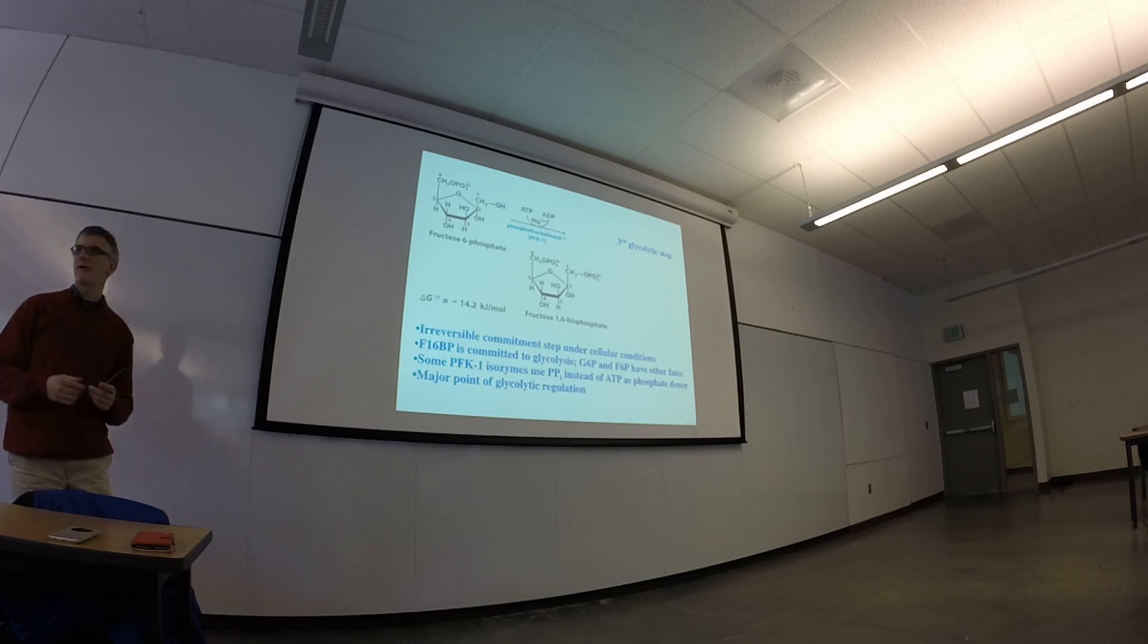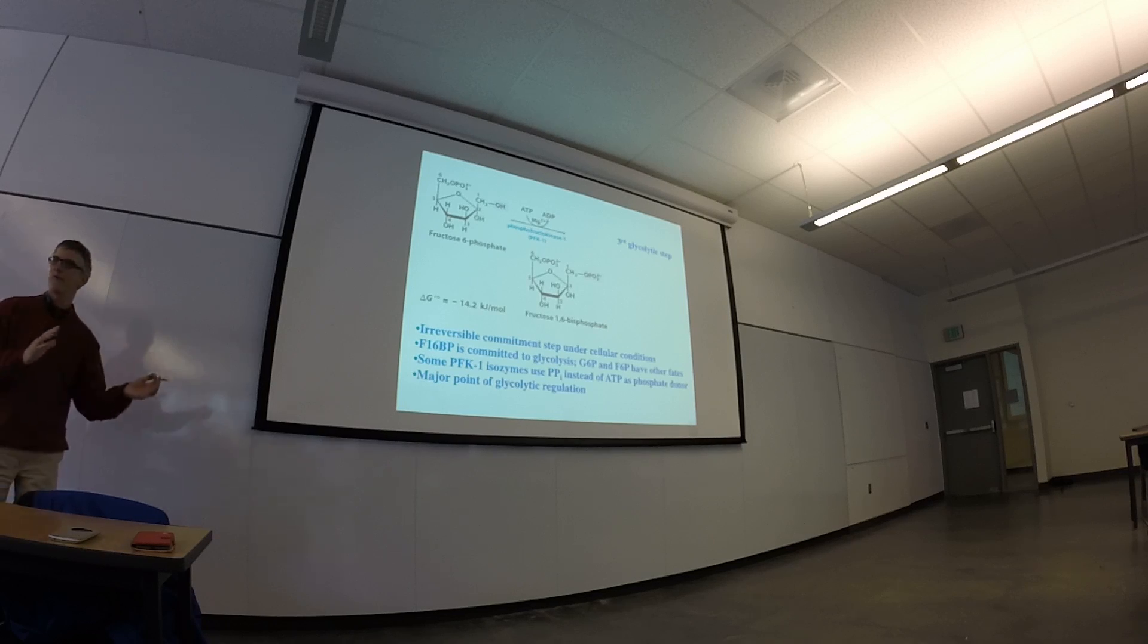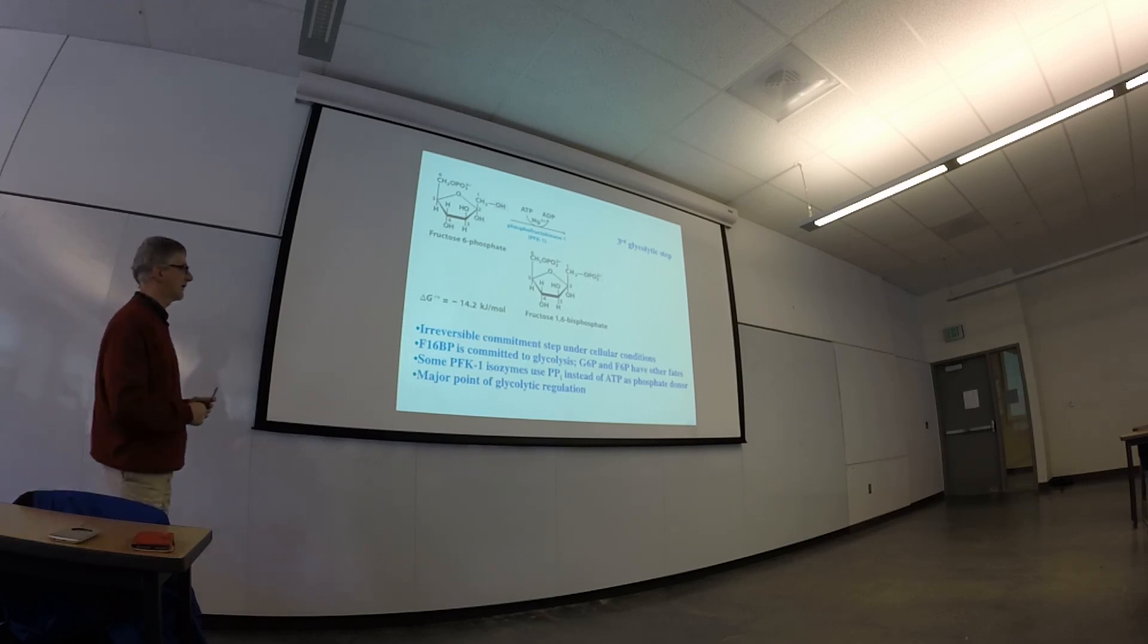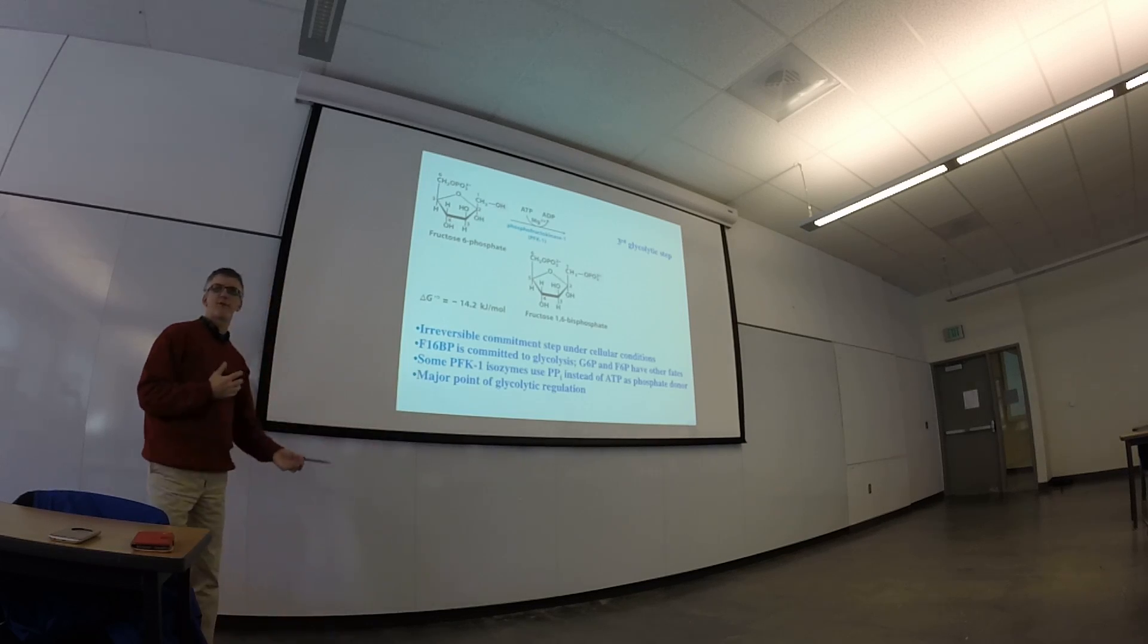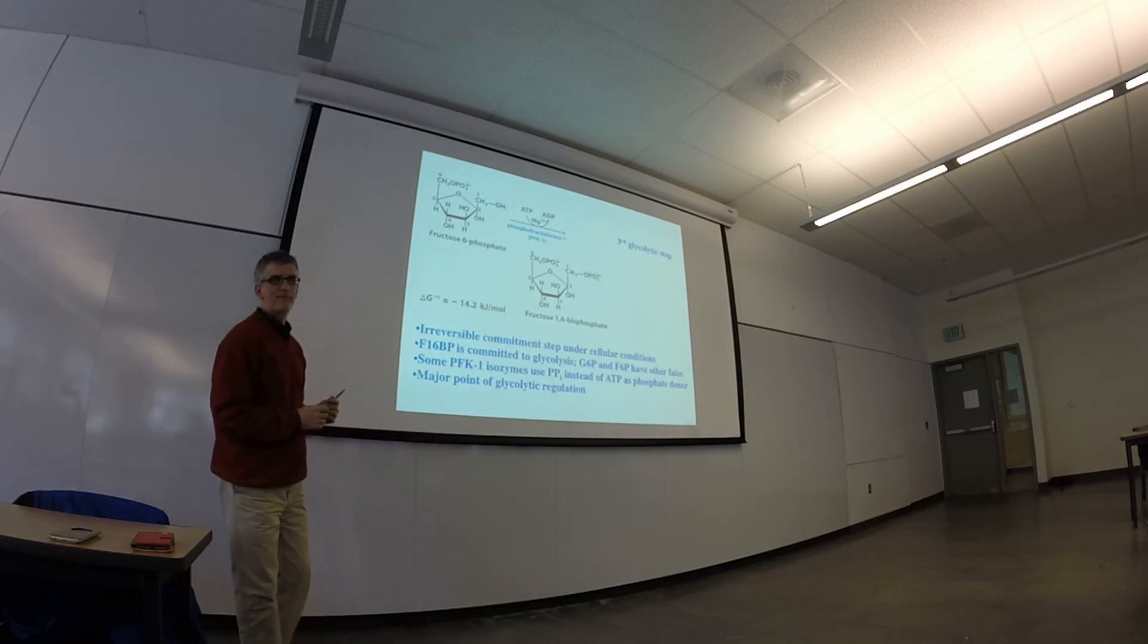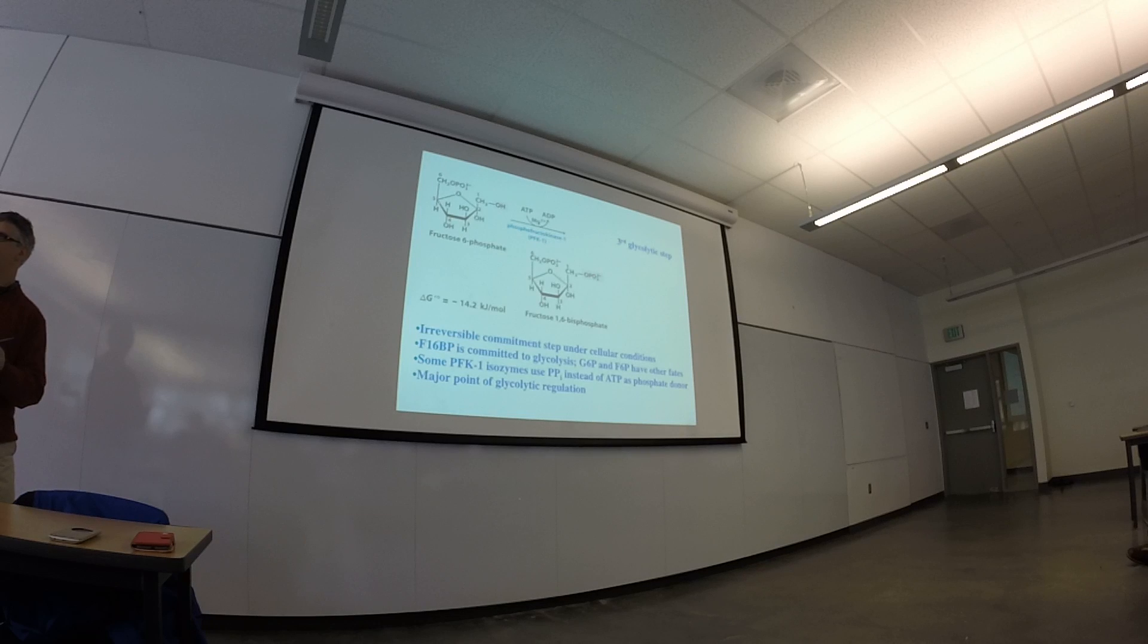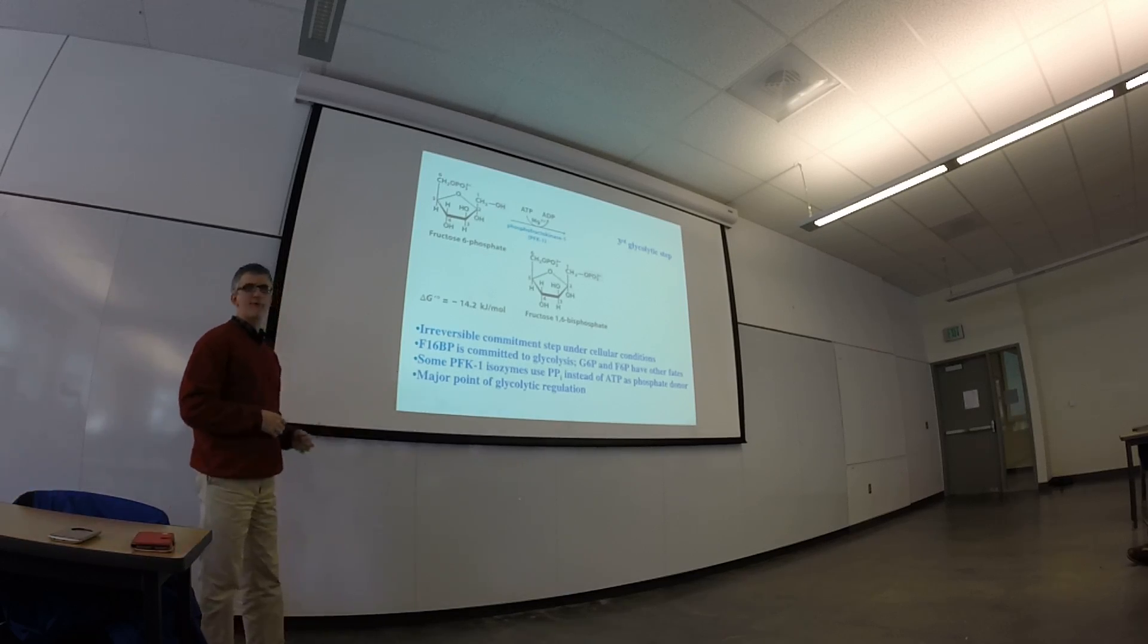So under the cellular conditions in most cells, this is the irreversible step that says okay, we're going to glycolysis now. Up before this point you can get to fructose 6-phosphate and still direct the carbon in that fuel molecule in another direction, direct it to storage or something else. But once you go here, the carbon is pretty much committed to going through glycolysis.